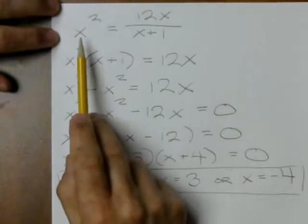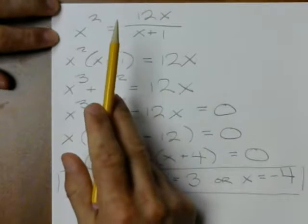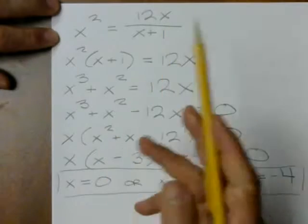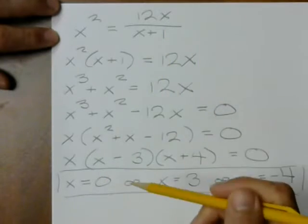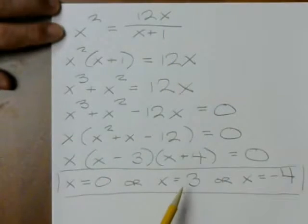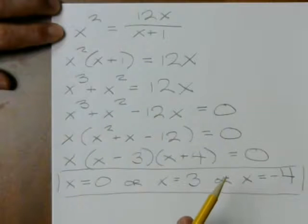Maybe not obviously, but x squared at 0 is 0 and 12x at 0 is 0, so I get 0 equals 0. So over here, at 3, I can easily plug in 3. What do I get?